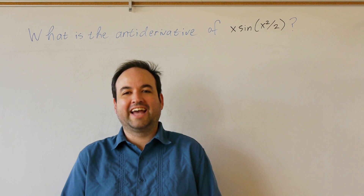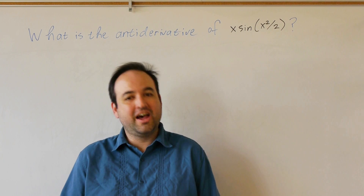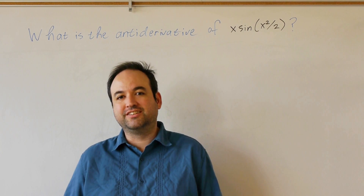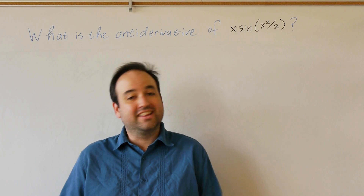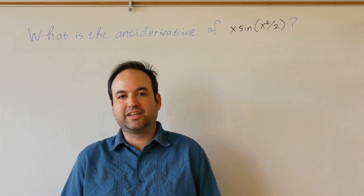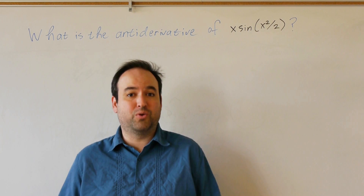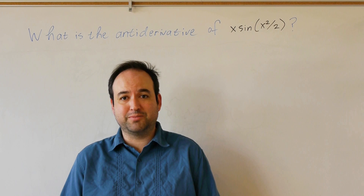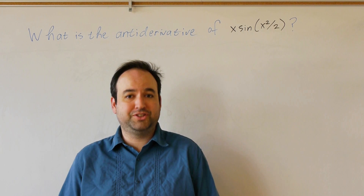Today we're going to look at how to find antiderivatives of functions of another function. This technique typically goes by the name substitution or change of variables, but really it comes from the chain rule.